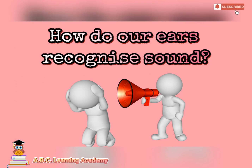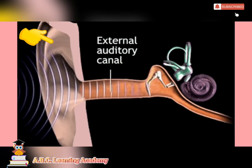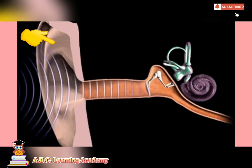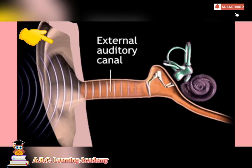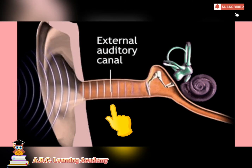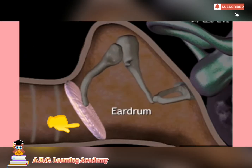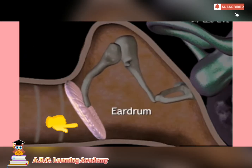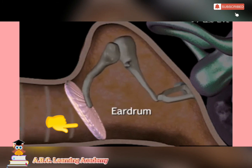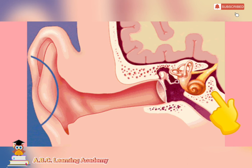How do our ears recognize sound? First, the outer funnel shape of our ears focuses and collects the sound. Then it will pass through the external auditory canal. The eardrum vibrates when sound waves hit it. Then the vibrations are carried to the brain and recognized.